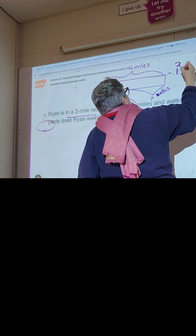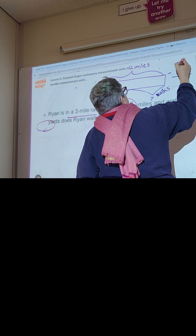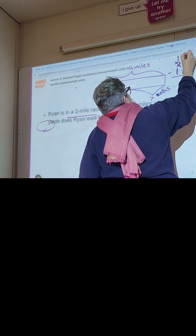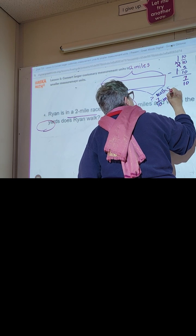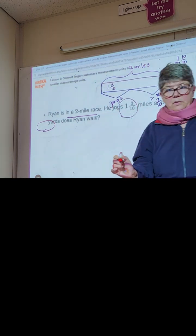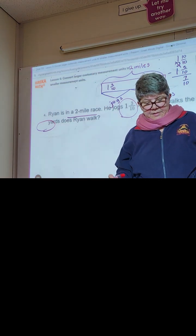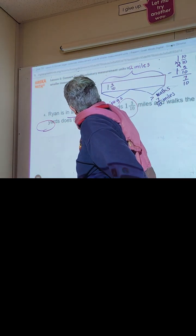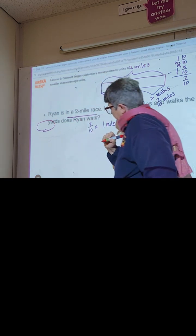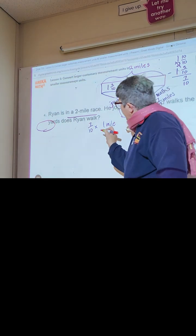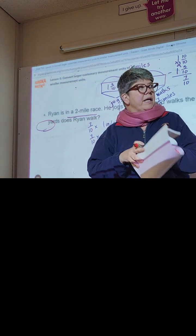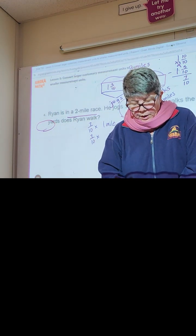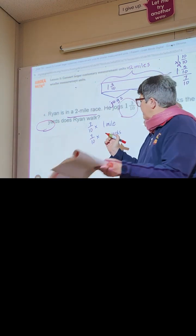Two minus one and three-tenths — we have to borrow here. Make this one and ten-tenths; ten minus three is seven, one minus one is zero, so he walks seven-tenths of a mile. Now we need to convert to yards: seven-tenths times one mile. We substitute the number of yards in a mile. Let's check our reference on page 41 — one mile is 1,760 yards.